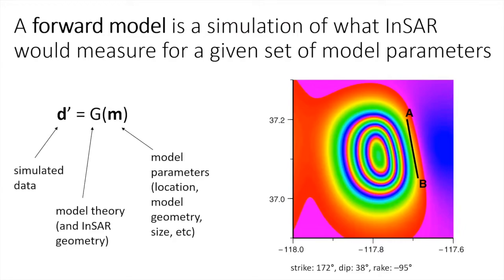Assuming you have a code that can produce displacement fields — X, Y, Z displacements of every pixel on your interferogram — we can make what we call forward models. A forward model is a simulation of what InSAR would see if you provide a modeling code with a set of a priori model parameters. Here is a forward model of the Eureka Valley earthquake in California in 1993, one of the earliest earthquakes studied with InSAR.